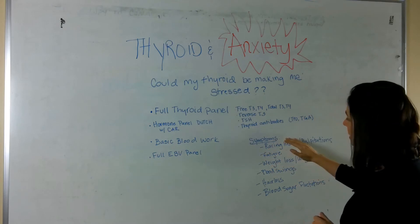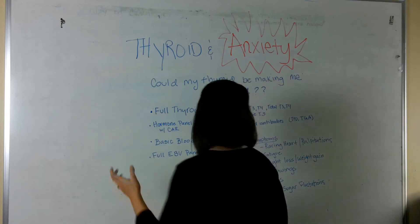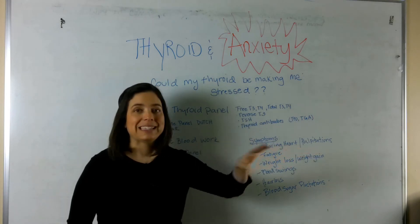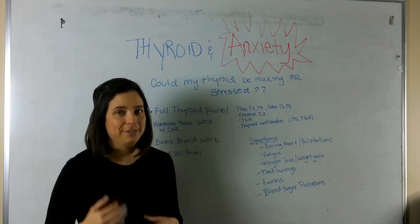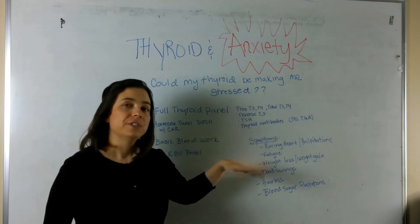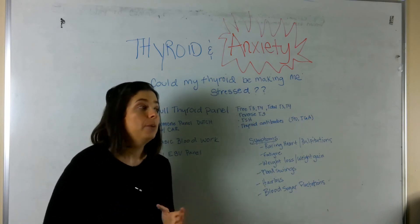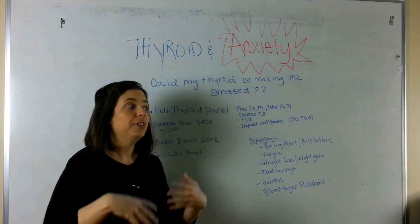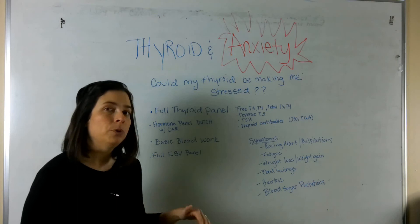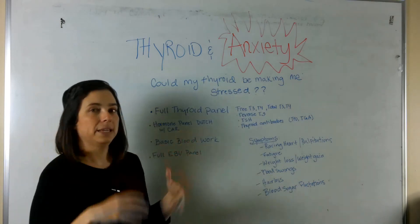So, some of the symptoms that you might have, I'm going to step over here, are racing heart and palpitations. That definitely happens when I feel anxiety. So, that is for sure. Fatigue, which fatigue can feel a lot like depression. And then when you're not in the depression, you feel anxious. So, you can kind of fluctuate back and forth between that low mood and sort of racing mood.